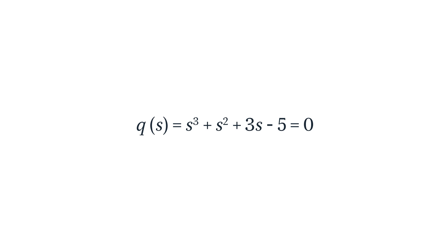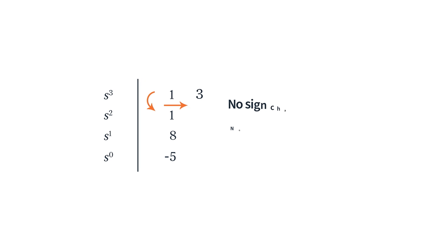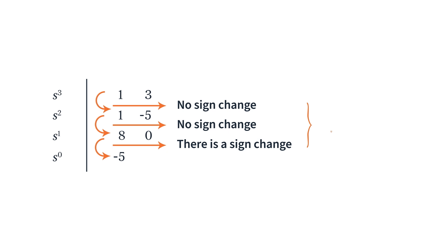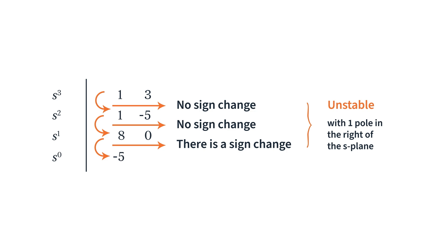Now let's consider another example: s³ + s² + 3s − 5 = 0. Since this equation has one negative coefficient, we can immediately say that the system is unstable — but let's verify it. I'll give you the opportunity to create the array yourself; I recommend pausing the video now. We end up with 1, 1, 8, and −5 in the first column. Since there is a sign change between s¹ and s⁰ with 8 and −5, we confirm that this is unstable, and since there was one change, there is one pole in the right half of the s-plane.